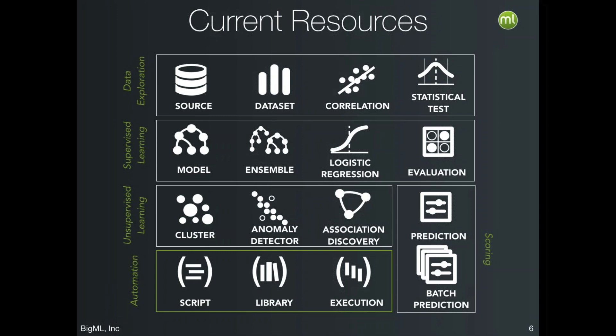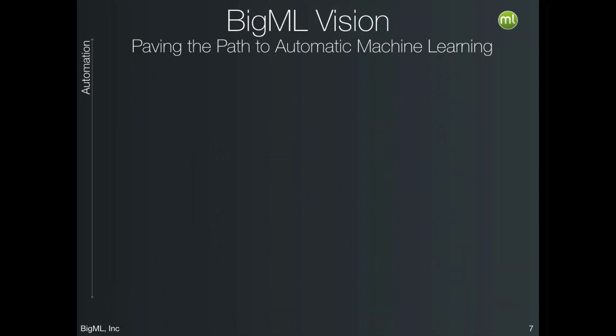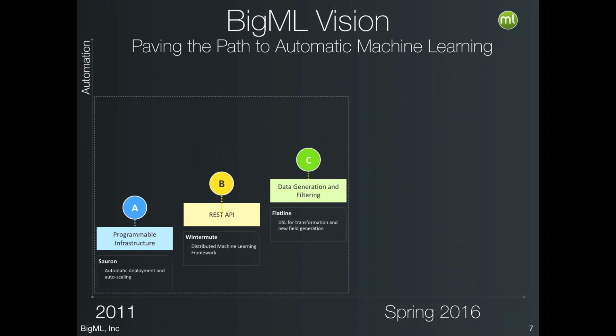The dirty secret of machine learning is that the largest improvements in accuracy more often come from feature engineering and model tuning rather than selecting different algorithms. To handle scaling, we created a tool called Sauron, which transparently handles the allocation of resources for machine learning tasks. We also created the world's first complete machine learning REST API, providing a clean programmatic layer for performing machine learning on top of our automated infrastructure.